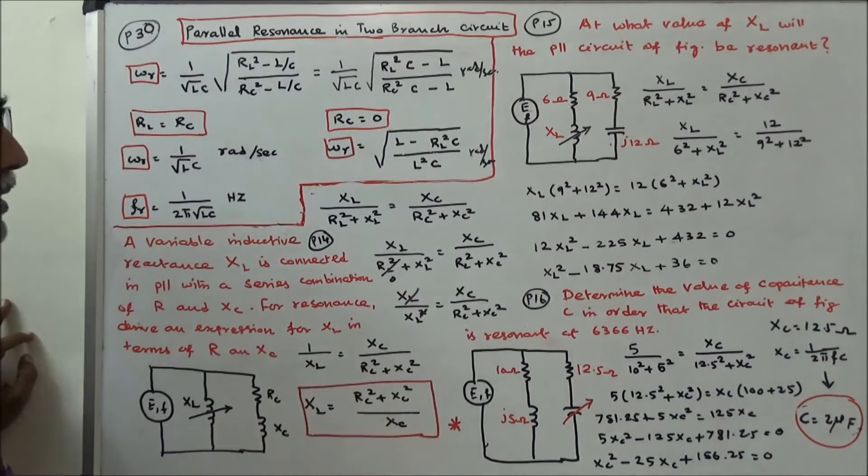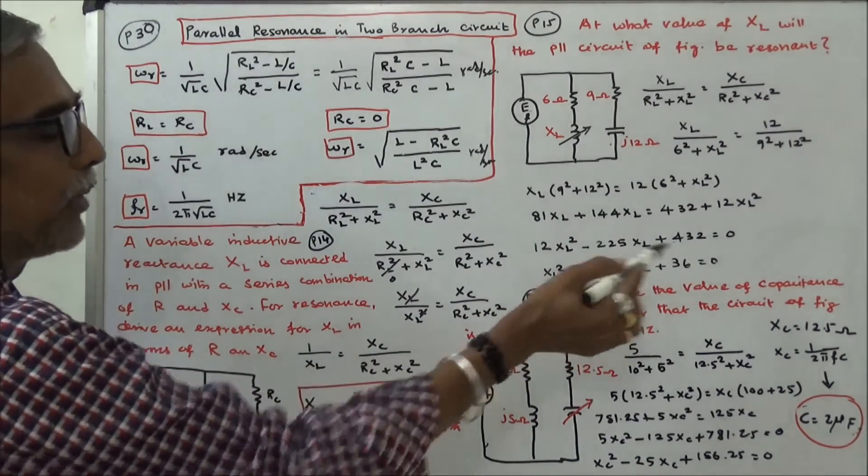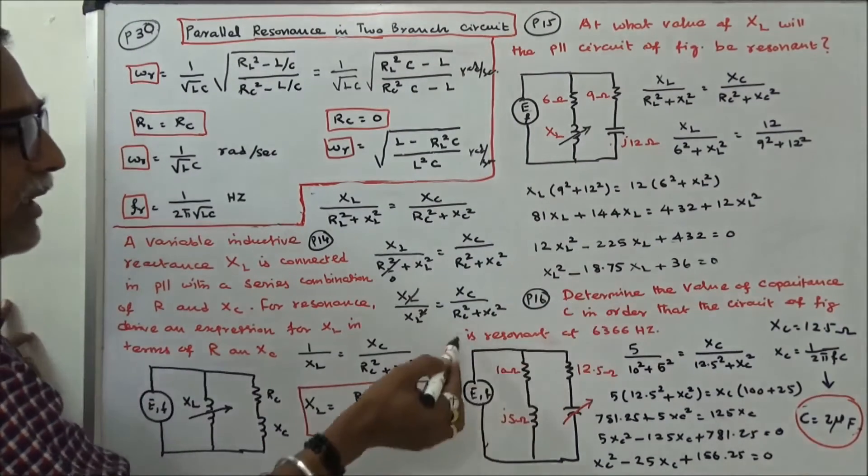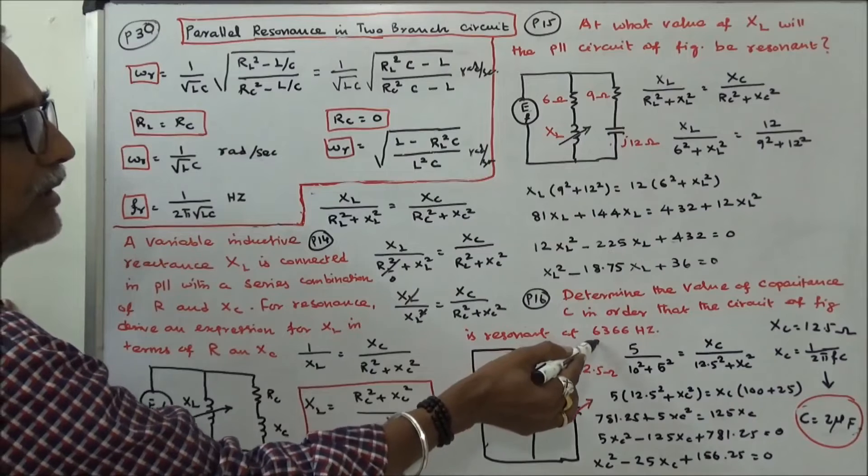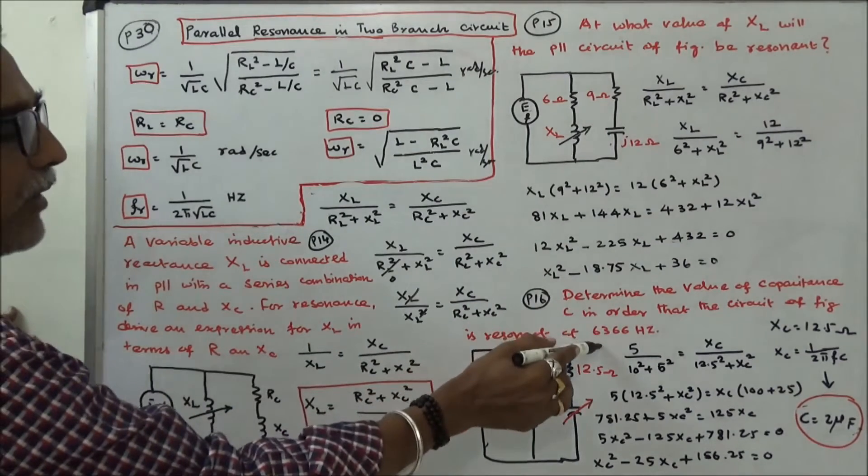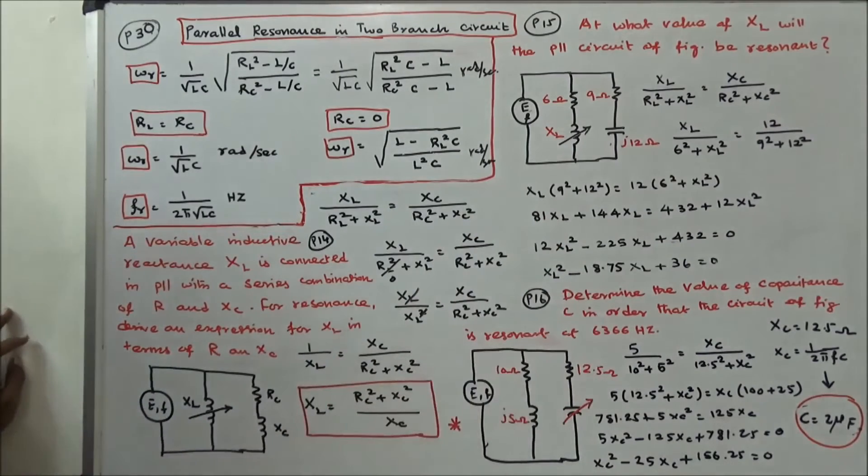The third problem is determine the value of capacitance C in order that the circuit of figure is resonant at 6366 Hz. Here the resonance frequency is given. Same way you have to work out.